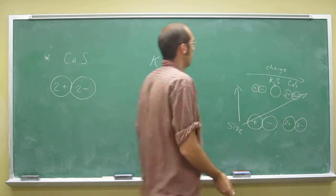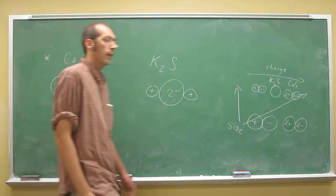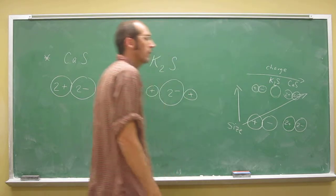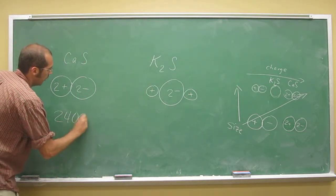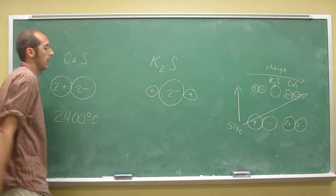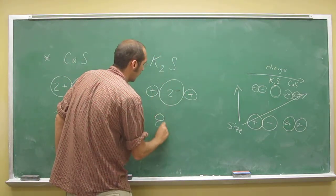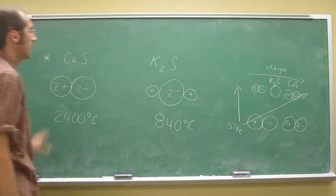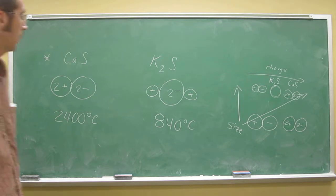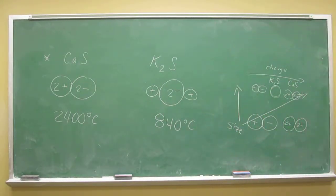So if we were to ask you which one has the stronger ionic bond, it would be calcium sulfide. If you look at the melting points of these two compounds, this one's 2400 degrees Celsius, and this one's 840 degrees Celsius. So this is a nice qualitative way of deciding which one has the stronger ionic bond.